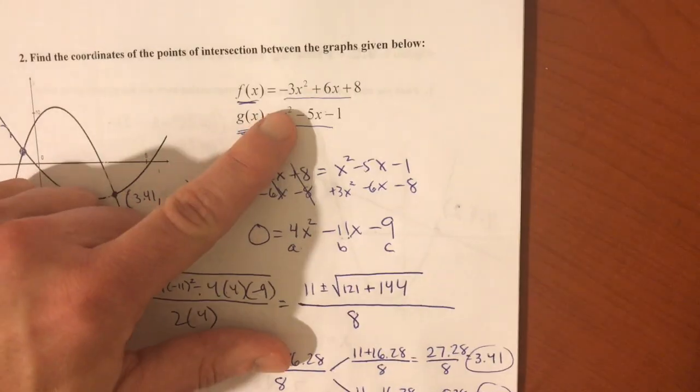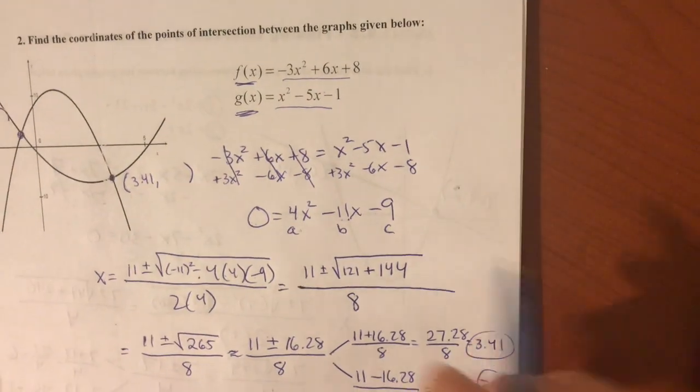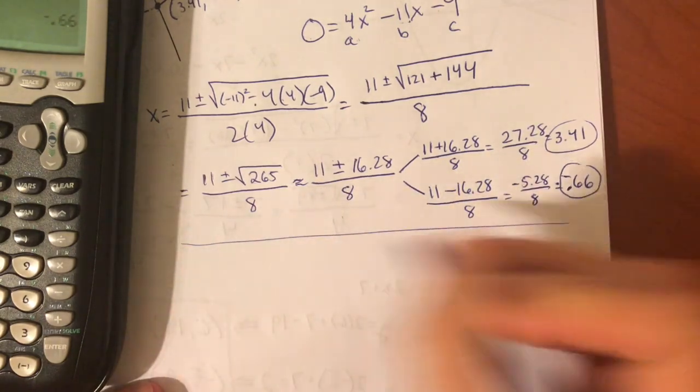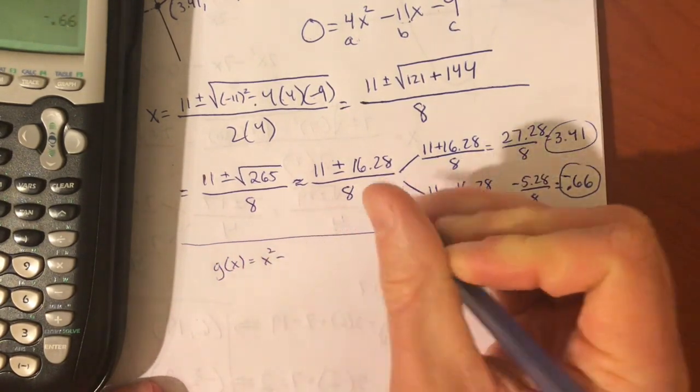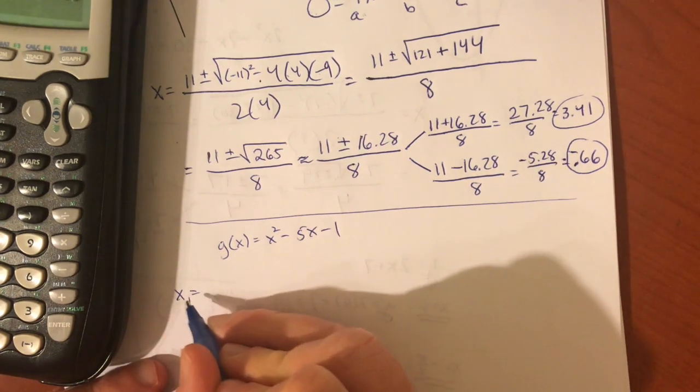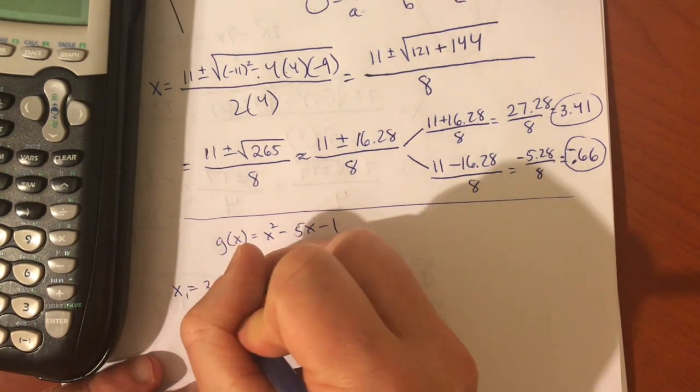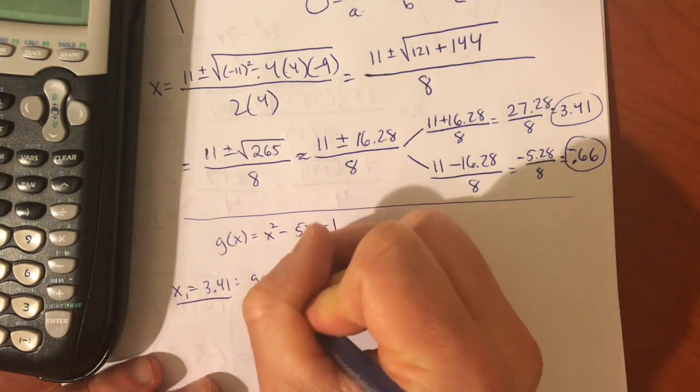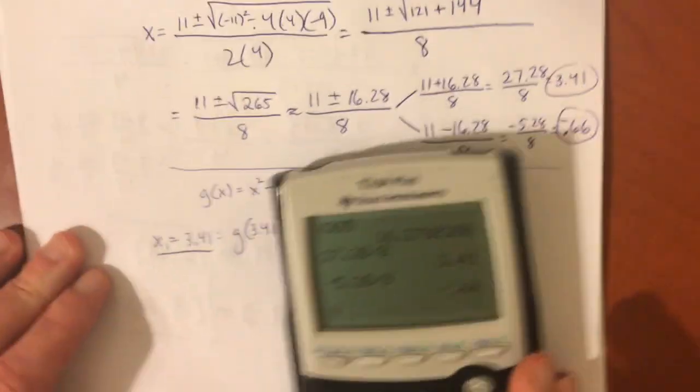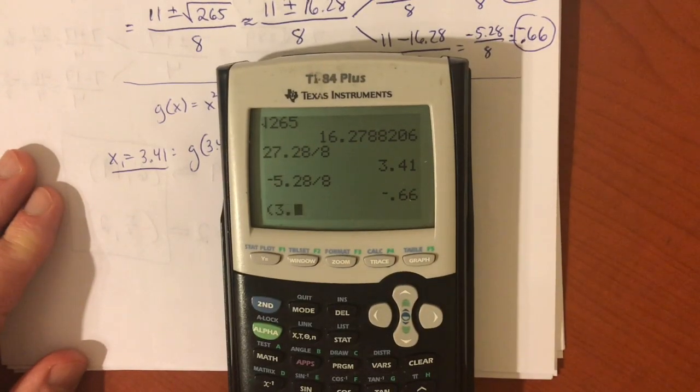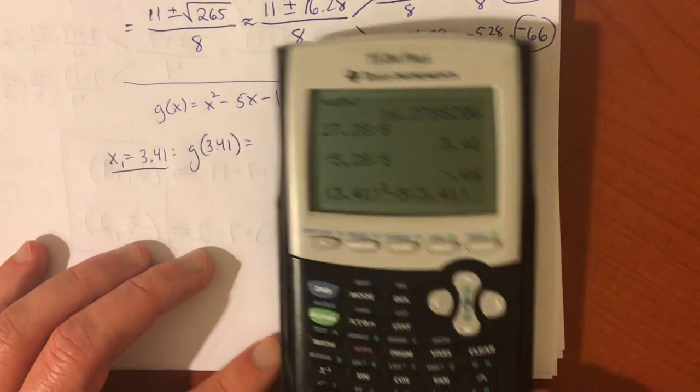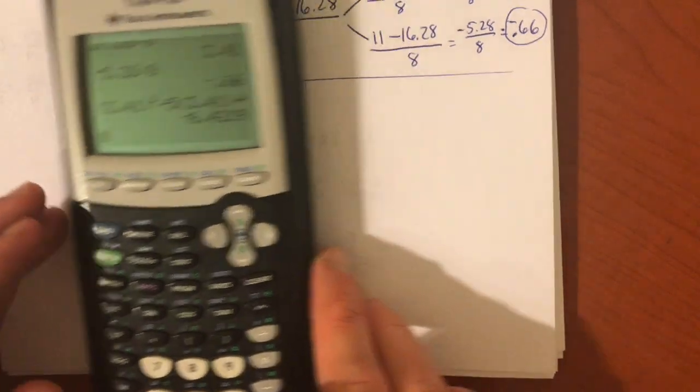Now, to plug those in, which equation? It's about a toss-up. I'll go into g. It seems like it's slightly easier, but it's about the same amount of work. So, g of x is x squared minus 5x minus 1. And, our first x value, sometimes people write x sub 1 is 3.41. And, when I plug that into g, g of 3.41, definitely going to be careful and use my calculator here with these parentheses, 3.41 squared minus 5 times 3.41 minus 1. And, you get about negative 6.42.